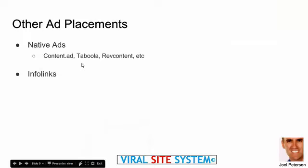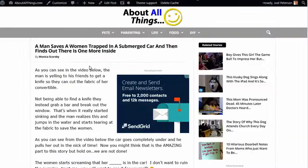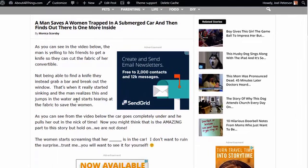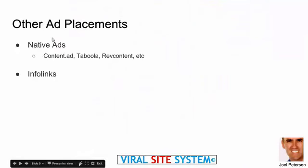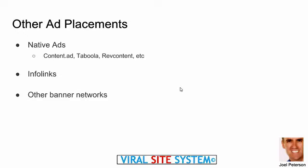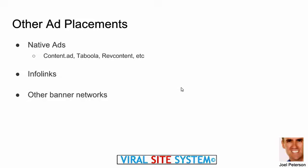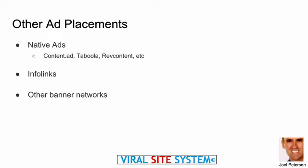InfoLinks is another company — we have a whole module on that. It will go and put links under words, so highlighted words can be clicked and you can make revenue with that. It can be a bit annoying to end users, so InfoLinks can work but sometimes people get annoyed if you do it too much. There are also other banner networks, and there are whole other sessions that talk more about these. But the bottom line is, no matter what you're using, you're going to be placing these ads throughout the site through the content. The whole idea is to increase ad revenue without ticking off the end user.